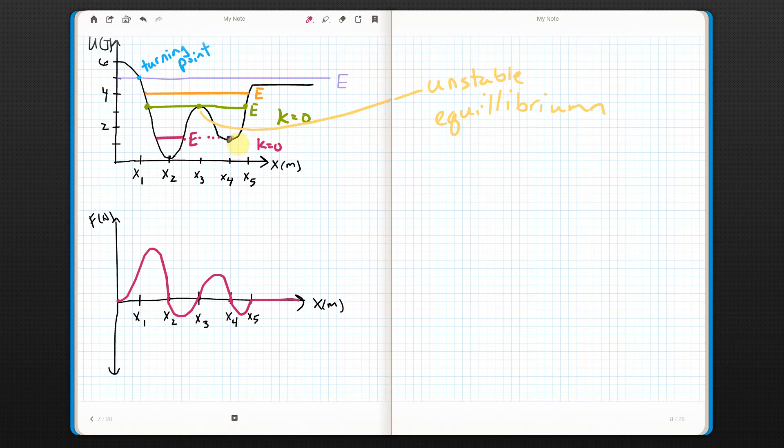And if I gave it even a little tiny nudge either left or right, well, if I give it a nudge to the right, it would be in a zone where the force was negative. So the force would push it back to the left, back where it was.